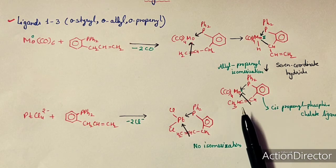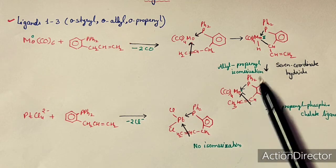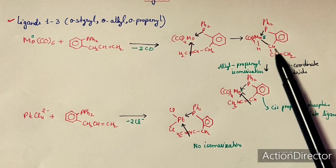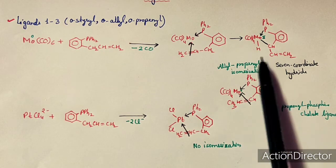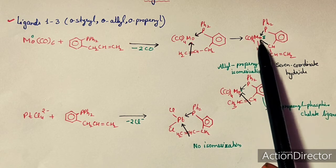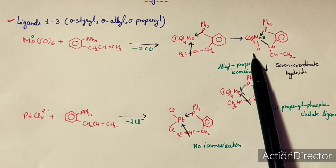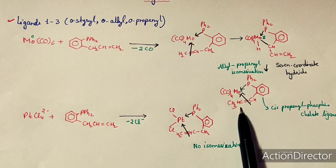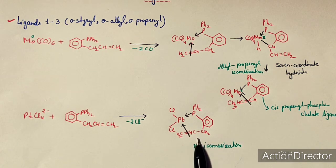In Group 6 metals like molybdenum, chromium, and tungsten, isomerization takes place because of the formation of the seven-coordinate hydride. The Group 6 metal exceeds the 18-electron rule in the reaction intermediate, which allows isomerization and formation of the propenyl complex. In the case of platinum(II), the allyl group cannot isomerize.